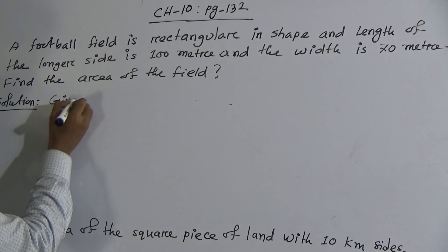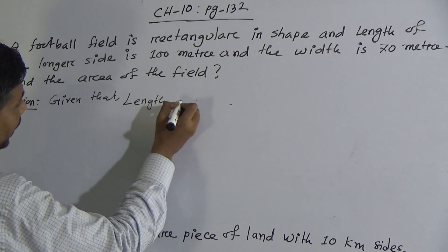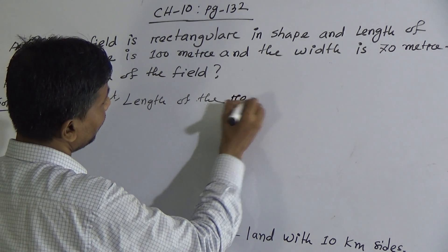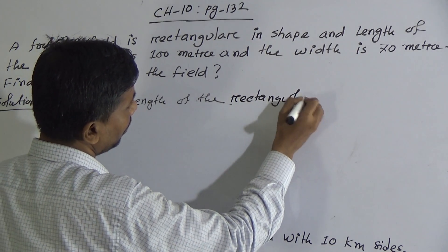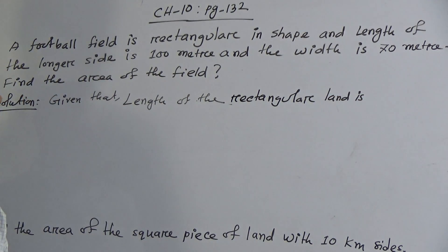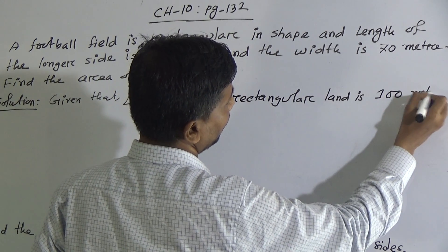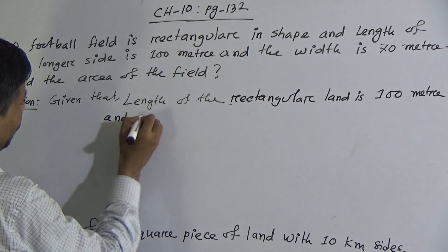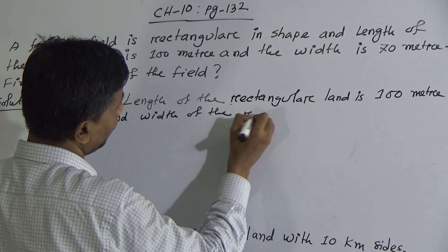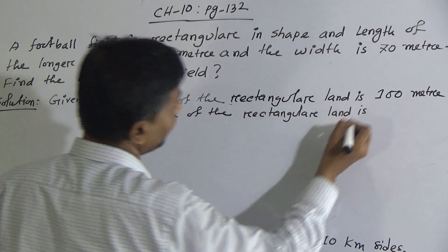Given that, length of the rectangular field is 100 meters and width of the rectangular field is 70 meters.